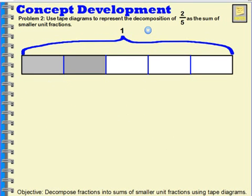This tape diagram is representing that my one whole is broken into five parts. So over here, I have two of those parts shaded. That's representing two-fifths. So here's one of those fifths. And here's the other fifth.